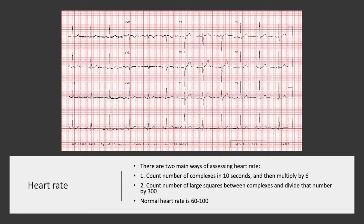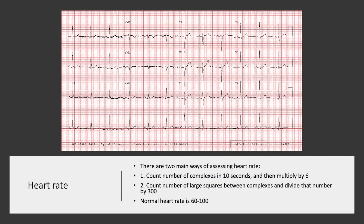For calculating the heart rate, the most important strip to use is what's known as a rhythm strip. This is usually a longer version of lead 2, and it's essentially the ECG taken over 10 seconds. So remember that with heart rate this has been taken over a minute — all you need to do is count the number of QRS complexes.